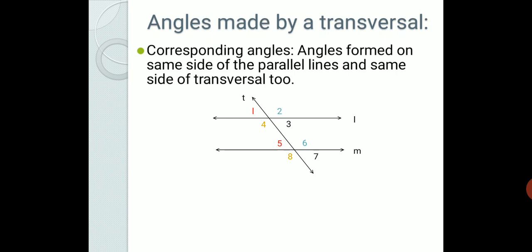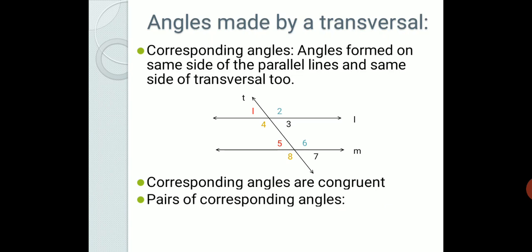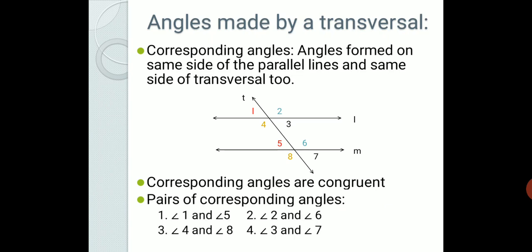There is a very important thing to remember about corresponding angles: corresponding angles are congruent to each other. Every pair has two angles which are congruent. The pairs of corresponding angles are: angle 1 and angle 5, angle 2 and angle 6, angle 4 and angle 8, and angle 3 and angle 7.